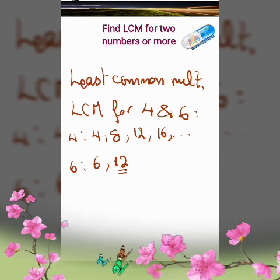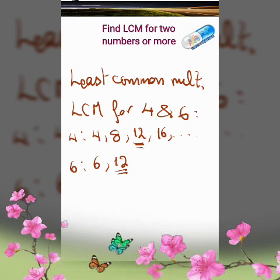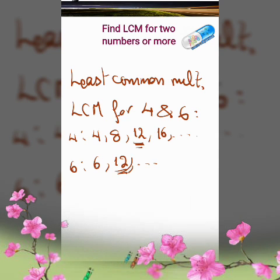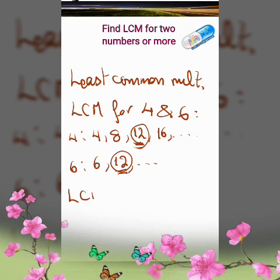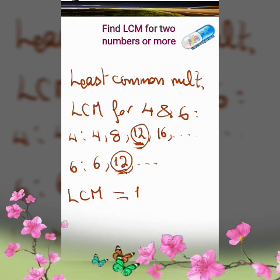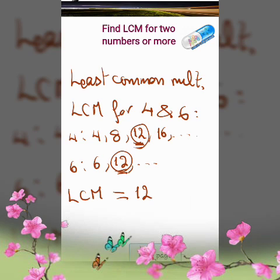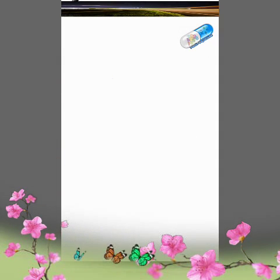Here I got 12 in both lists, so I can stop here — this is the least common multiple. So the LCM for 4 and 6 is equal to 12. Now I will teach you the easiest way to find the LCM, and it's called the ladder method.